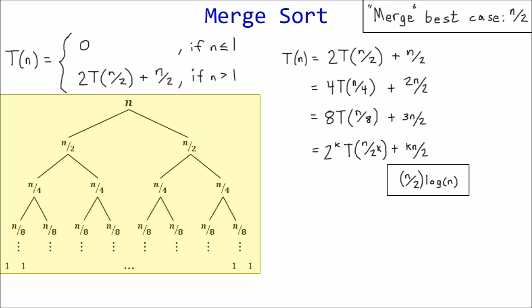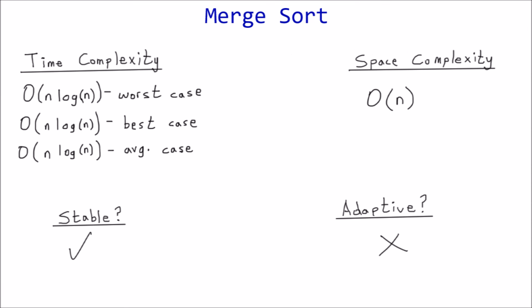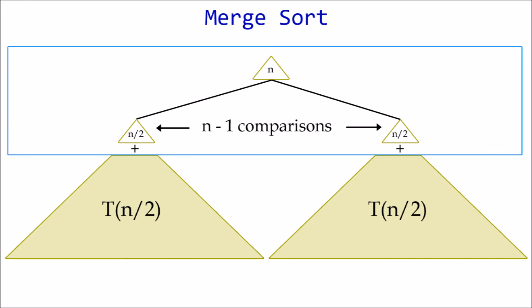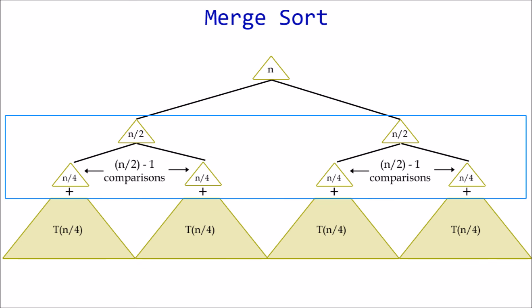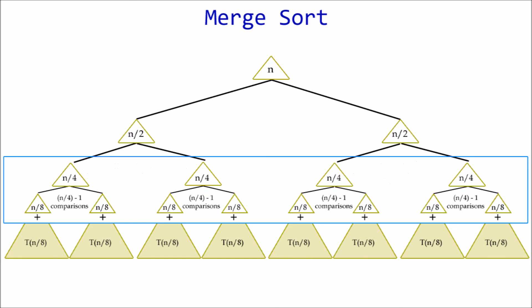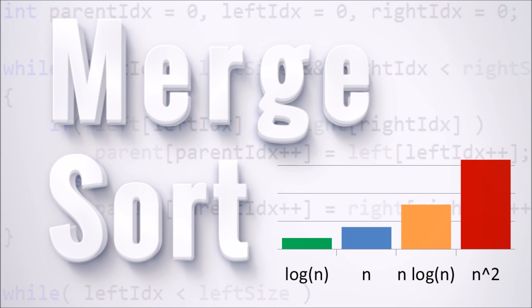We can see that best case performs a little better, but both are still classified as O(n log n) in big-O standards — and average case is as well. That concludes the analysis of merge sort. Overall it's a very efficient algorithm for sorting large lists, as long as memory isn't an issue. I hope this video was helpful — until next time, thanks for watching.